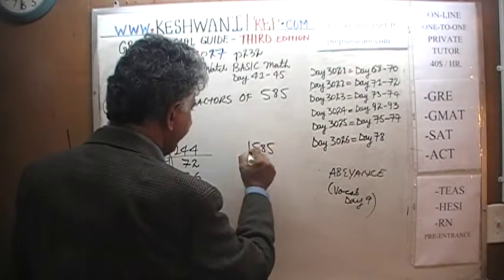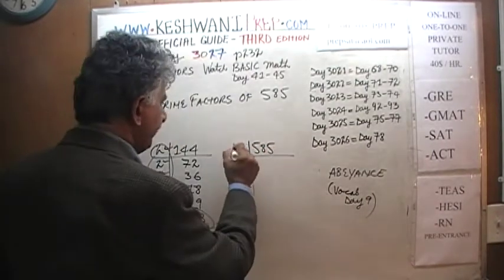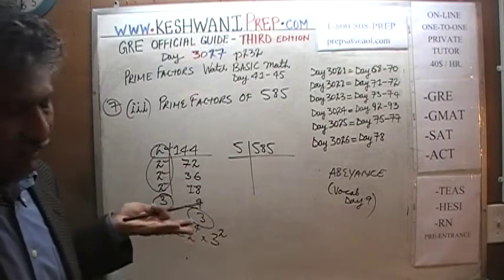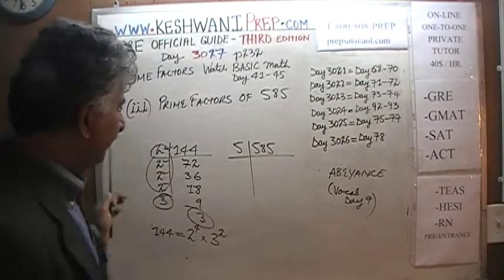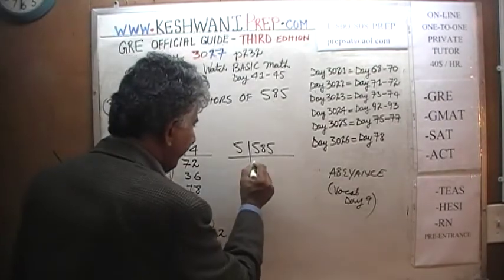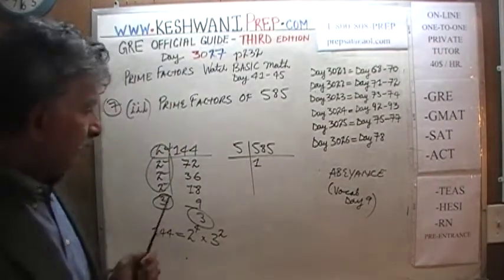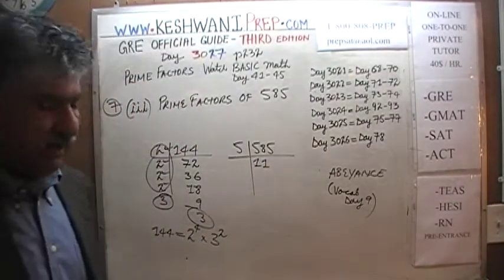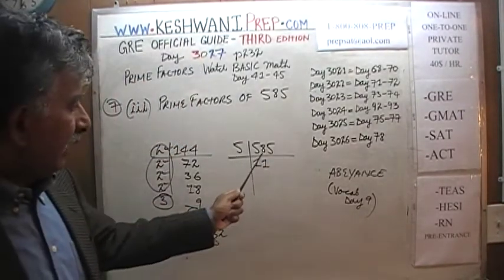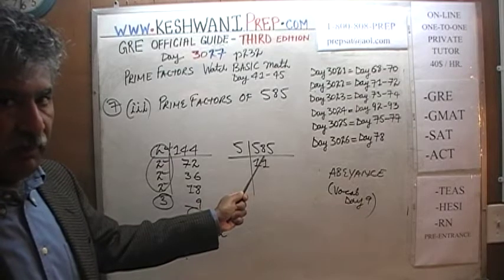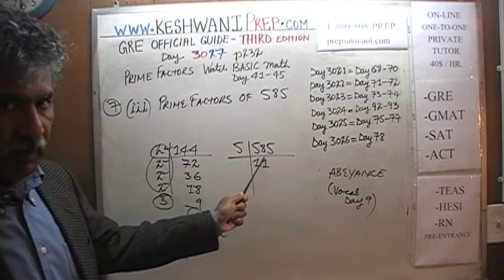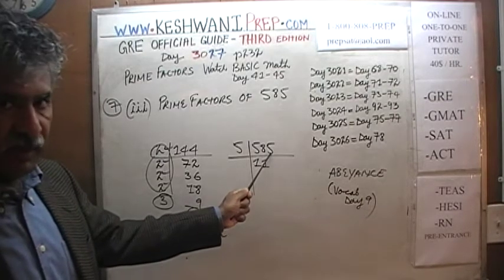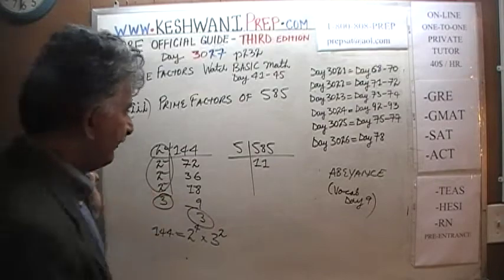585 — let's divide by 5 because it ends in a 5, and if a number ends in 5 or 0, it's divisible by 5. 585 ÷ 5 = 117.